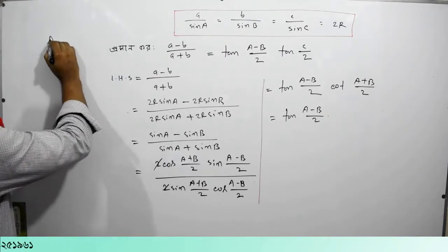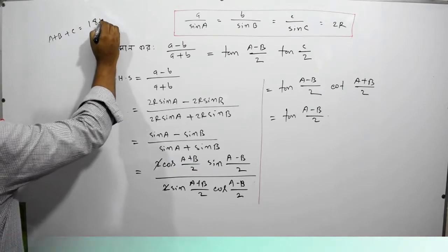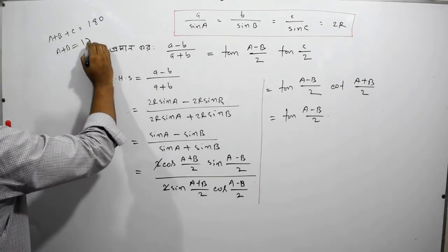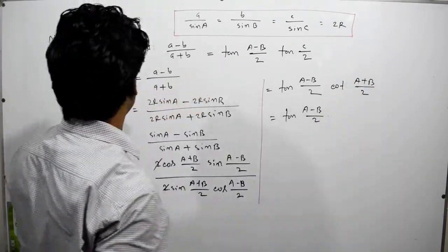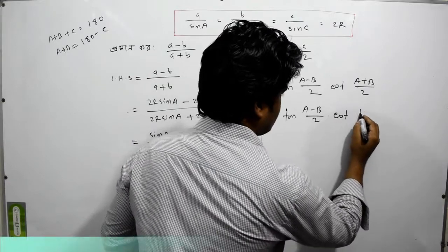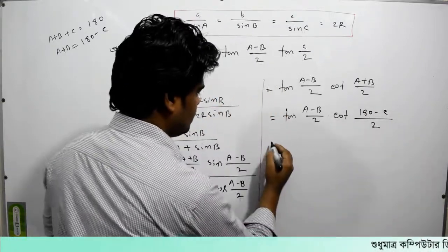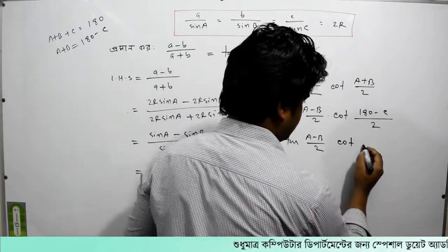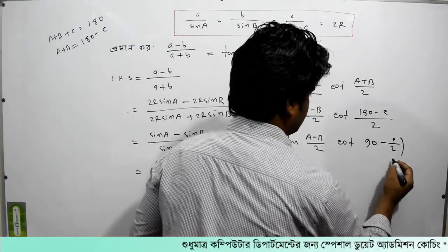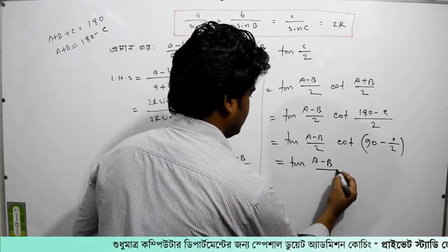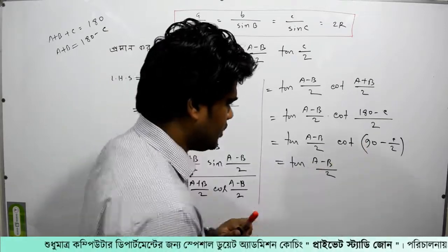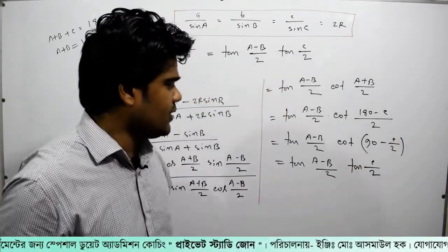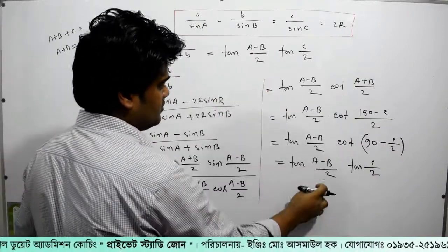Since A plus B plus C equals 180 degrees, that means A plus B equals 180 minus C, so (A+B)/2 equals 90 minus C/2. Therefore the expression becomes tan(A-B)/2 divided by tan(C/2), which gives us tan(A-B)/2 times tan(C/2). This is the result.